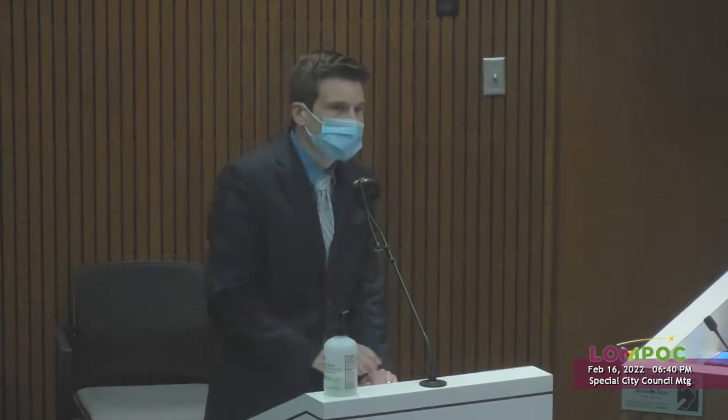There are no concerns about racial gerrymandering under any of the plans — they're all contiguous and, as far as we know, not dividing neighborhoods or communities of interest. The next distinguishing criterion would be easily identifiable boundaries, where there are some differences between plans. Compactness doesn't show much difference. The remaining distinctions come down to voter shifting and future population growth.